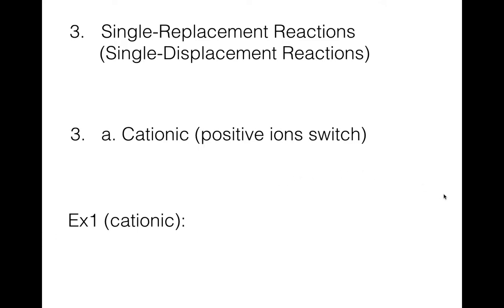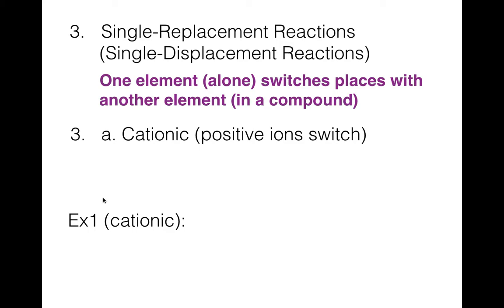Those are the first two reaction types. Remember you can always pause or rewatch. Next are single replacement reactions, also called single displacement. There are two types — cationic and anionic. One element that's alone switches places with another element that's in a compound. I like to use the sad dating story: a couple goes on a date, a friend comes along by themselves, and the friend ends up swooping in and stealing the date.